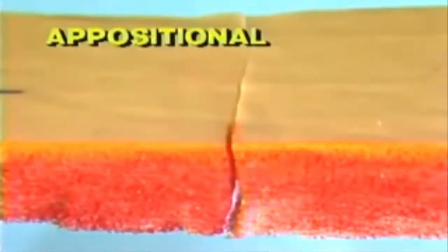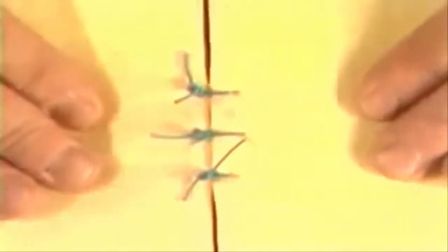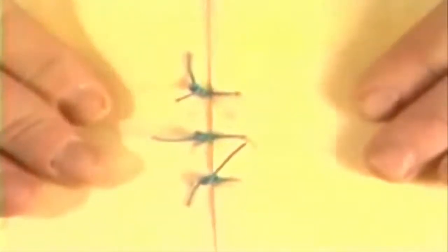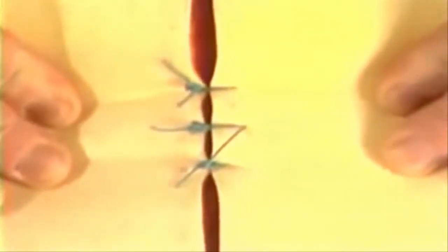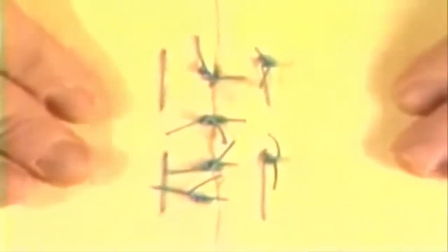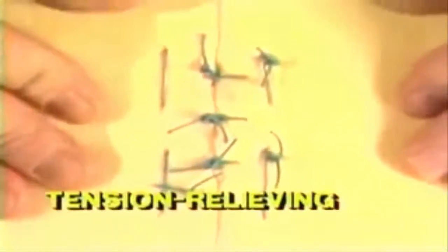Additionally, suture patterns may be classified as: first, appositional, bringing individual tissue planes into anatomic alignment; second, inverting, turning tissue inward toward the patient or toward the lumen of a viscus; third, everting, turning tissue edges outward toward the surgeon; or fourth, tension relieving. In this model, a non-tension relieving suture gaps when pressure is placed on the tissue. Note how the addition of a tension relieving suture removes the tension forces from the wound.